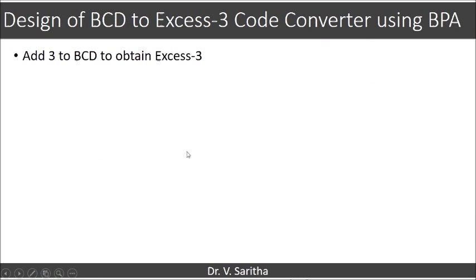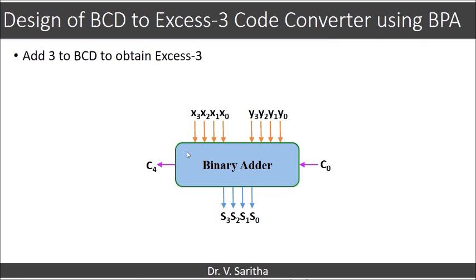We have now seen binary parallel adder and subtractor. Using these circuits we can easily design code converters. The first example is designing a BCD to XS3 code converter using the binary parallel adder. To get XS3 from a BCD input, we simply add 3 to the BCD value. In the binary parallel adder block diagram, substitute X with BCD and Y with 3, and the sum output will be XS3. It is very simple to design a BCD to XS3 code converter this way.